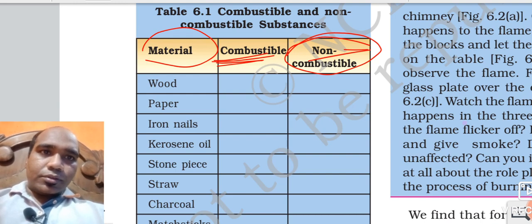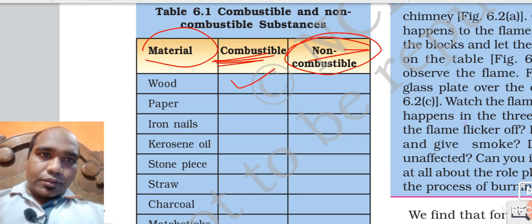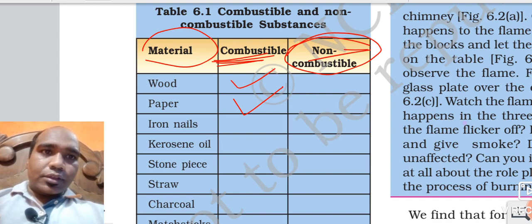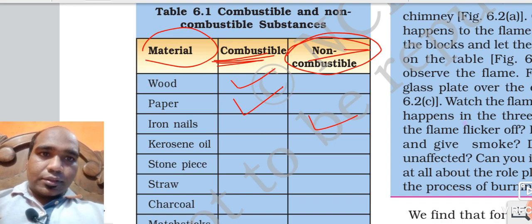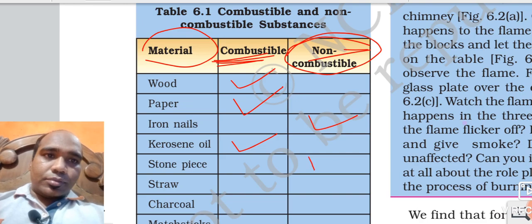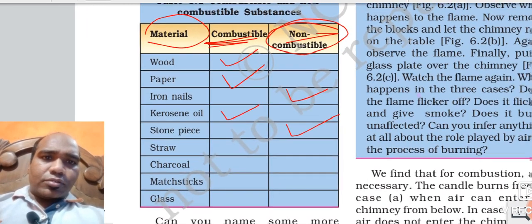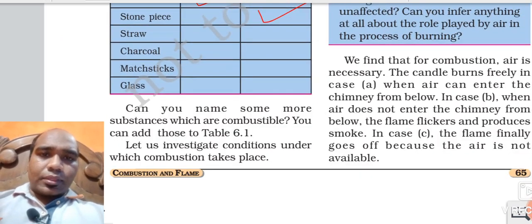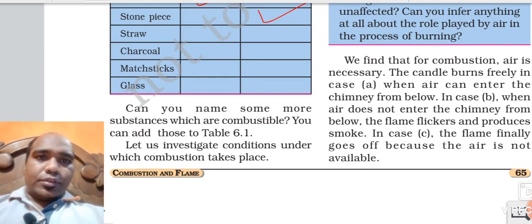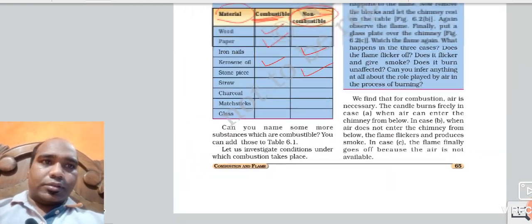Materials are given and we have to tell whether it is combustible or non-combustible. Combustible means which will easily go under combustion, and non-combustible are substances which don't go under combustion. Now, wood - wood is combustible, we can burn it. Paper - paper we can burn, so it is combustible. Iron nails - we cannot burn, so it is non-combustible. Kerosene oil - yes, it is highly combustible. Then stone piece - it is not combustible. Like this, straw, charcoal - you can make the list.